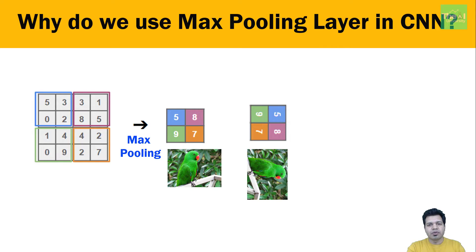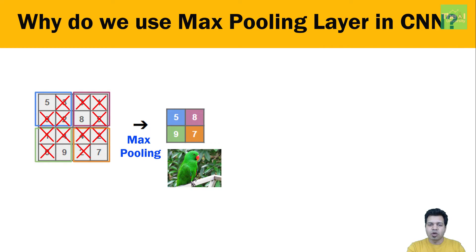By applying max pooling, we are reducing the dimensionality of each feature map, getting rid of 3 out of 4 pixels that are not as important, and thereby reducing the size of the image. In a nutshell, we are not only preserving features and introducing spatial invariance, but also reducing size. Size reduction enables faster processing during model training, speeding up computations. Additionally, by removing some noise and extracting only significant features, we can reduce overfitting.